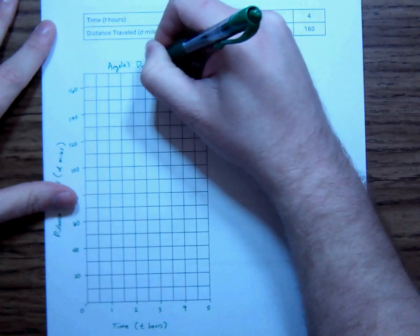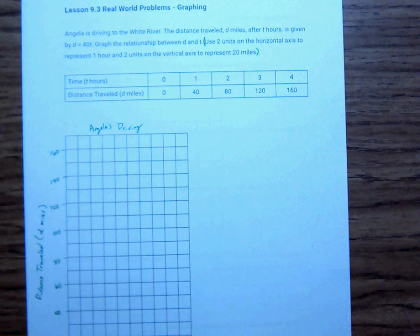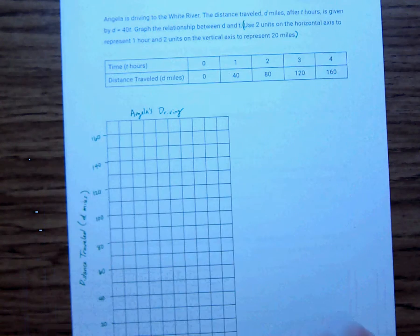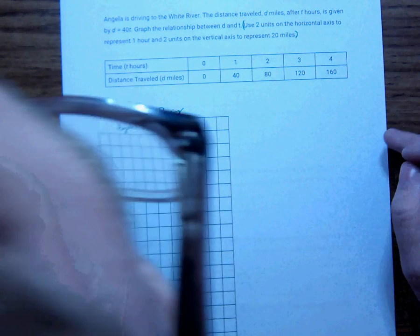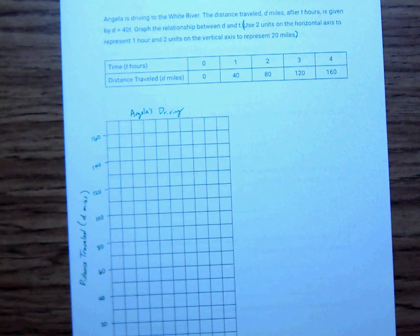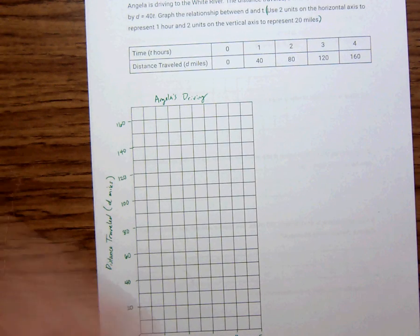And that comes from Angela's Driving to the White River. The distance traveled, D miles, blah, blah, blah, and so on. So that's over here is a little blurry. I notice, I don't know if that will do anything or not. So, yeah, there, that's a little better.